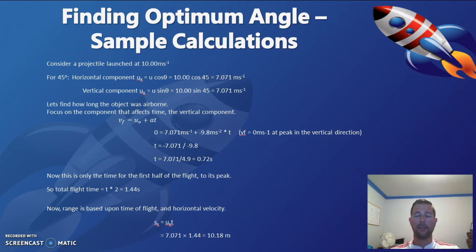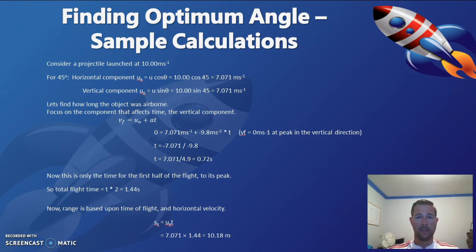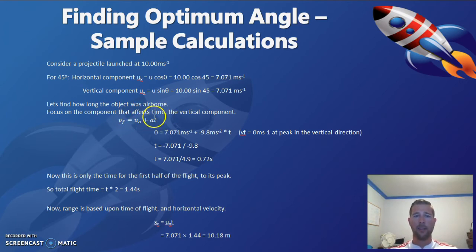In this example we find the different values for a projectile launched at 45 degrees from the horizontal — measured upward from the ground. The x and y components of the velocity are equal at seven point zero seven one meters per second, forming an isosceles triangle. To find the time of flight we focus solely on the y component — the component that goes up and down — and substitute our values into the equation.